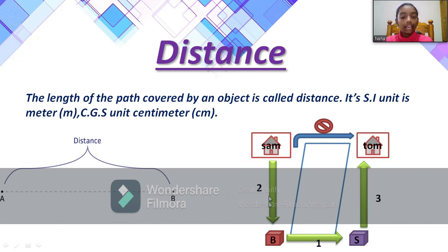So let us calculate the distance from Sam's house to Tom's house. First Sam started at his house and then he went to the bakery. From Sam's house to bakery it's 2 kilometers, and from bakery to the shop it's 1 kilometer. So total he has covered 2 plus 1 equals 3 kilometers, and from shop to Tom's house he has traveled 3 kilometers. That means 3 plus 3 equals 6. So Sam has traveled 6 kilometers in total to go to Tom's house.